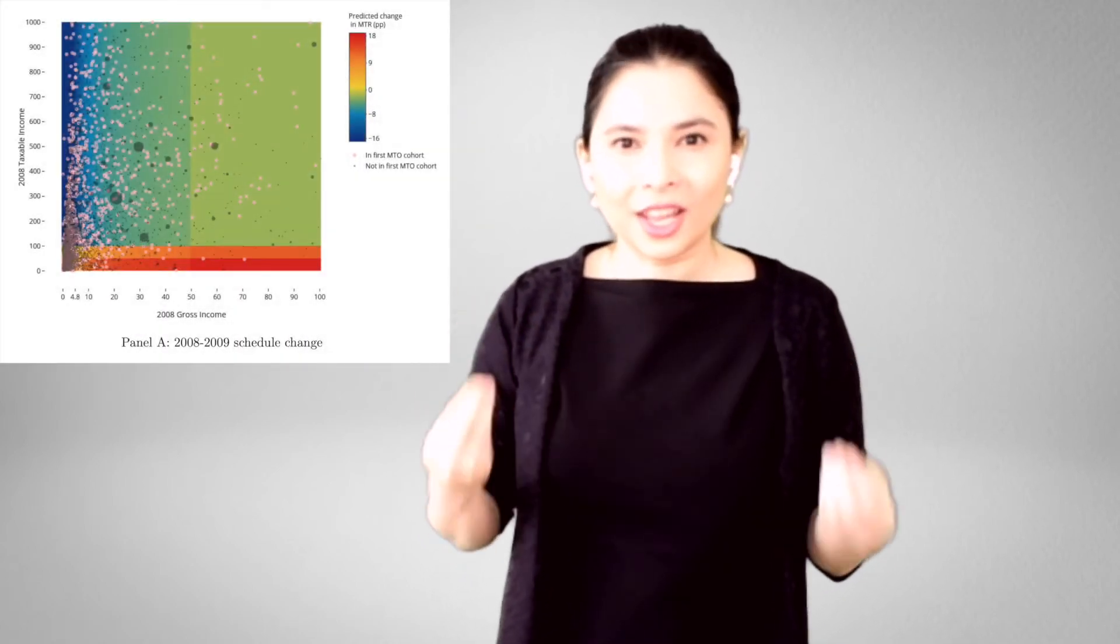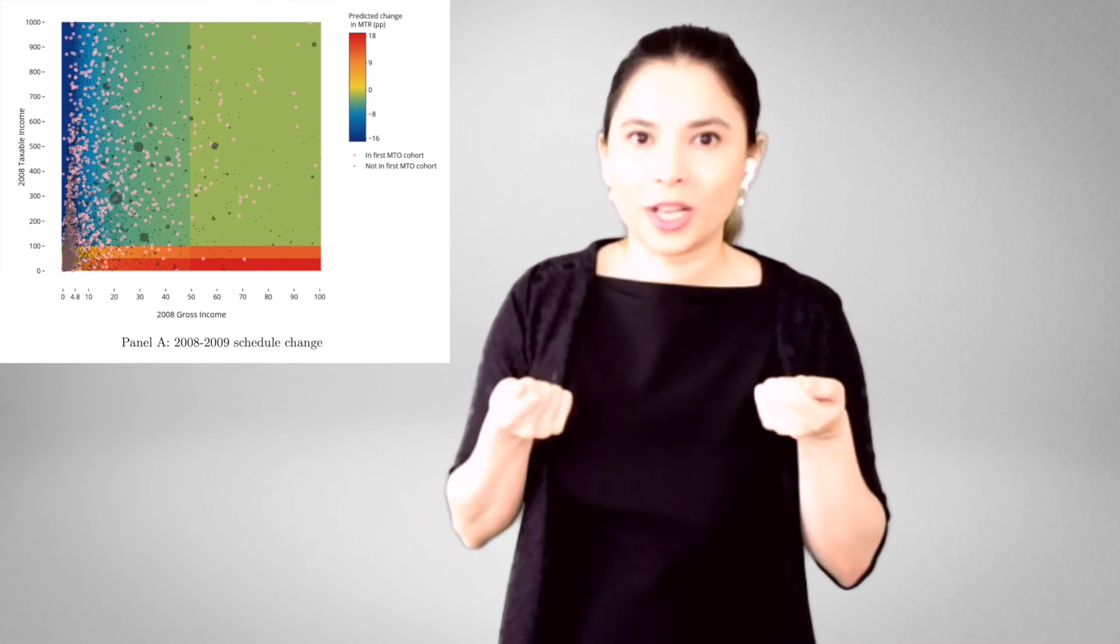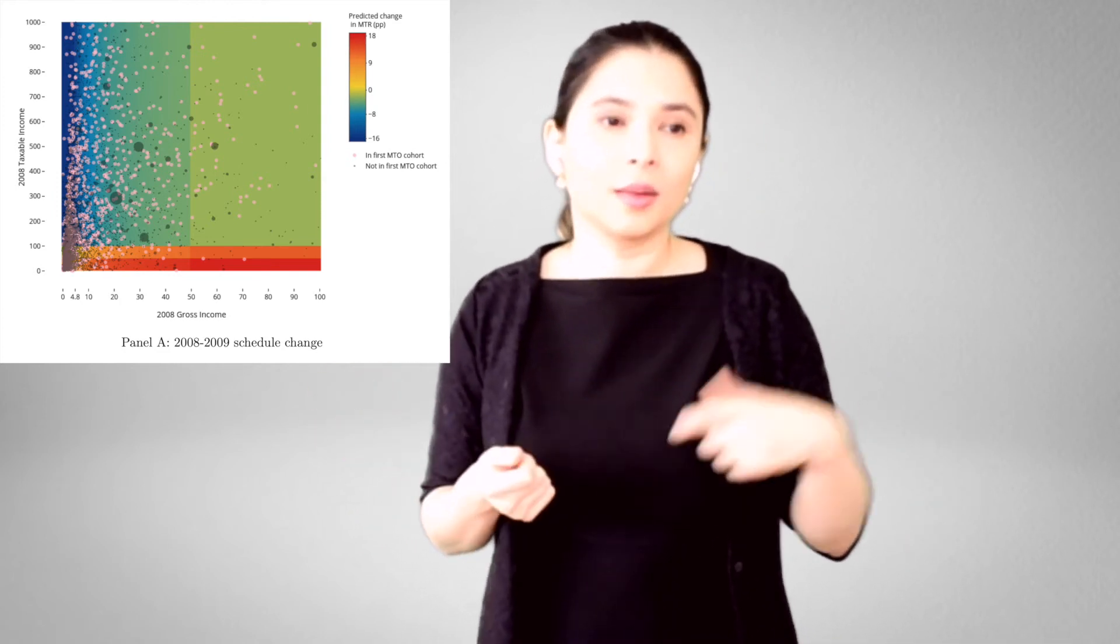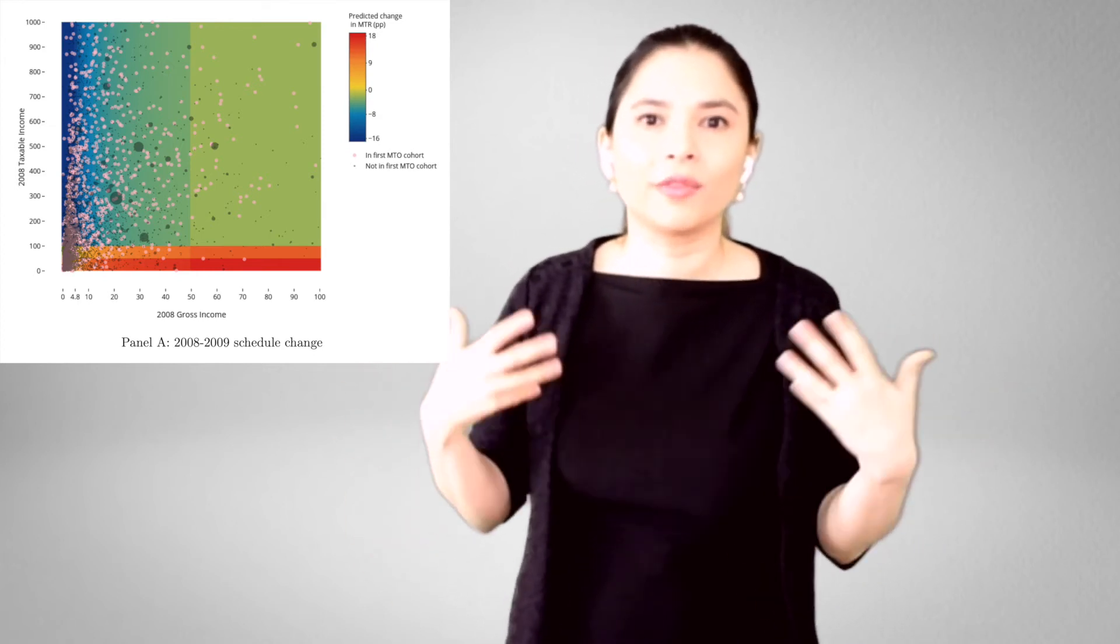What this reform generated for us researchers is an incredible amount of variation in the change in marginal corporate income tax rates that the taxpayers face because of the reform. Some taxpayers experience tax cuts, others tax increases, some large tax cuts, some small tax cuts. And so, we use that incredible amount of variation to estimate the key parameter in any analysis of tax policy, which is the elasticity of taxable income. The elasticity of taxable income says, with respect to the net of tax rate, which is what we analyze, if I raise the percent of the income that you get to keep, by how much more income do you report? And we estimate an ETI of 0.59, meaning that if you were to increase the net of tax rate by 1%, taxpayer will report 0.59% more income.